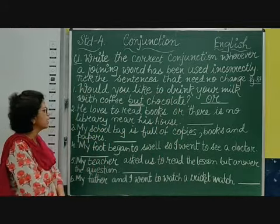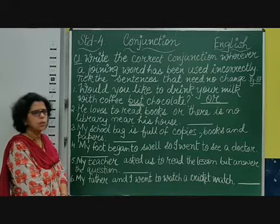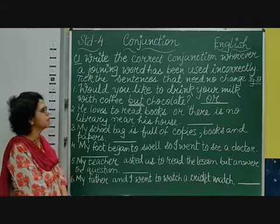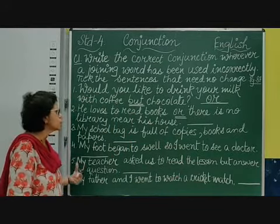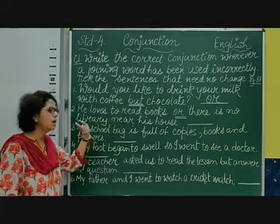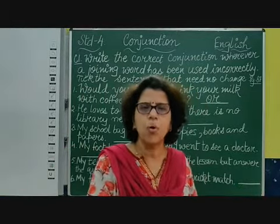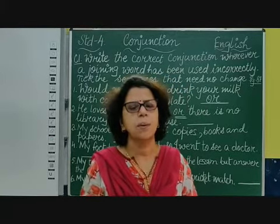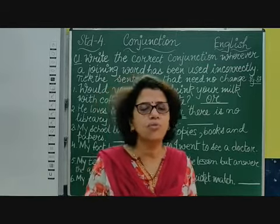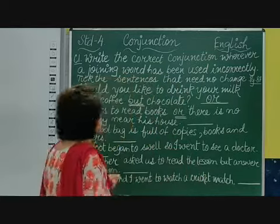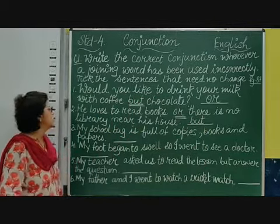Second sentence: 'He loves to read books, or there is no library near his house.' The conjunction here is 'or'. Is it correct? We are not giving a choice here. The sentence is saying he loves to read books, but there is no library — the ideas are different. He wants to read books, but there is no library near his house. So we cannot use 'or' since there is no choice being offered. It should be 'but there is no library near his house'.